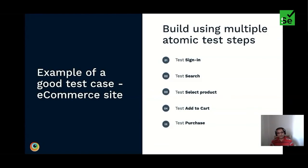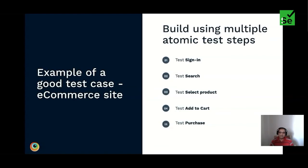Consider another scenario: an existing user adds a product to a wish list. Here you just need to create one new atomic step — add to wish list — and the other atomic steps like sign-in, search, and select product can be reused. So to summarize, these test cases are repeatable with the same expected outcome regardless of how many times executed; reusable across different scenarios; accurate in serving their intended purpose; traceable back to requirements; and atomic — testing only one thing at a time.